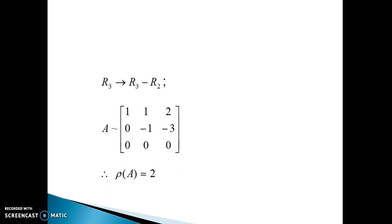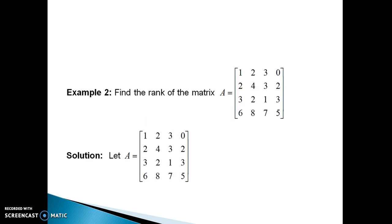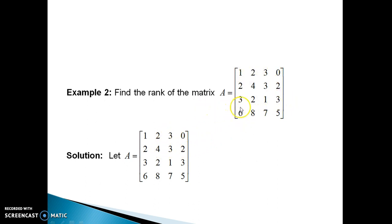If this example is clear to you, we can move on to find out the rank of a 4 by 4 matrix. Here is example number 2: find the rank of matrix A. I would suggest you write down this matrix very carefully — otherwise you will get an answer, no doubt about it, but that answer may not be correct. So always remember to write down the matrix carefully.